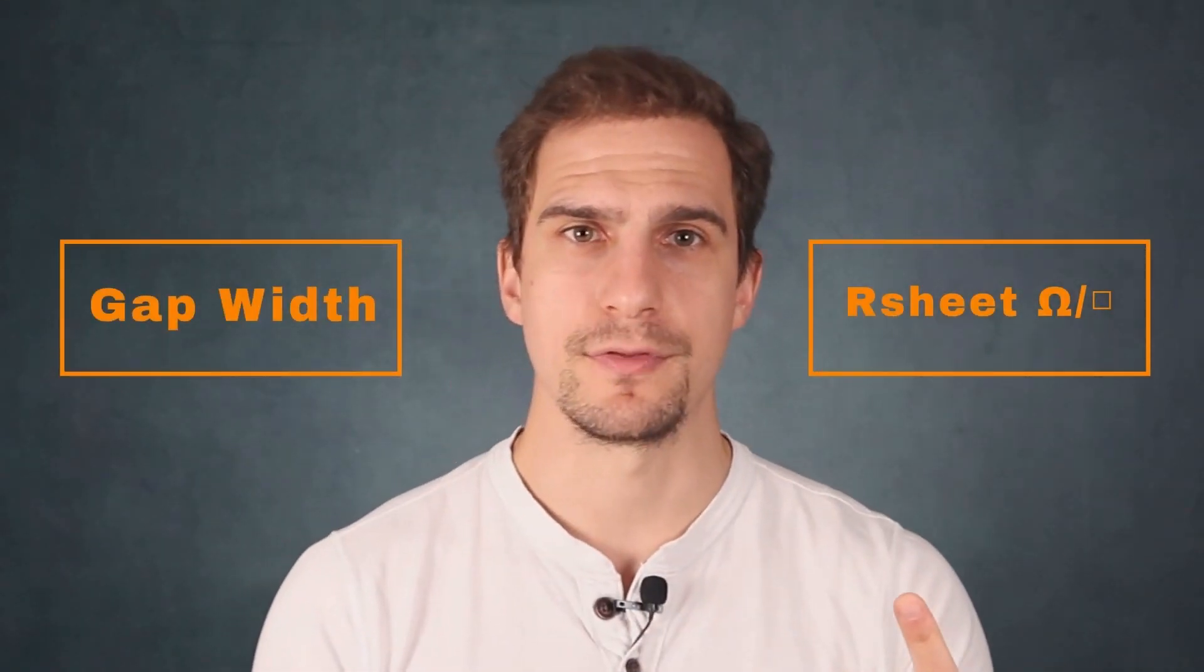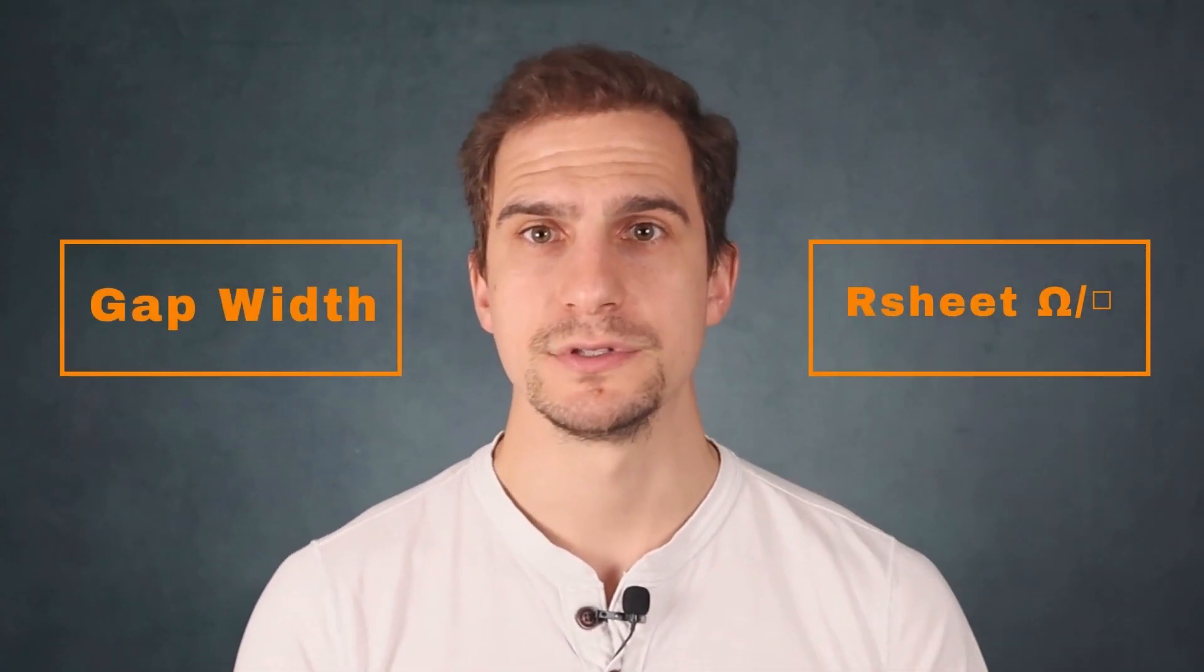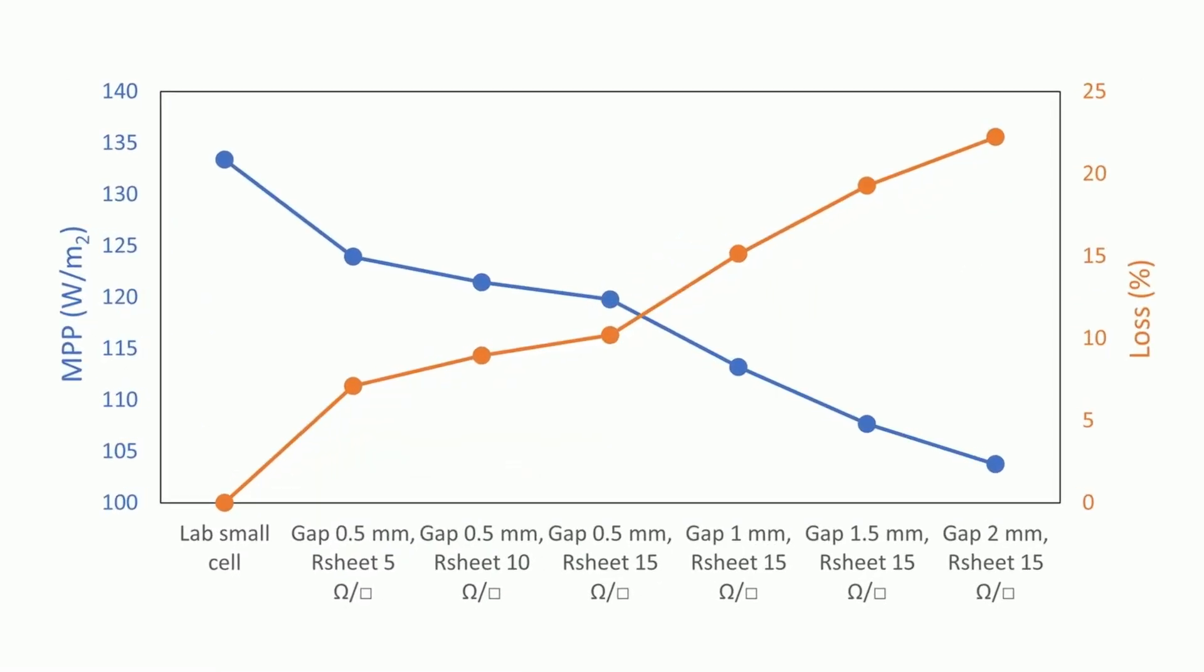We have two factors to consider, sheet resistance and the gap width, to maximize the power output, and both contribute differently. This graph presents a compelling look at power density losses, given different gap width and sheet resistance values, compared to a lab-scale solar cell.